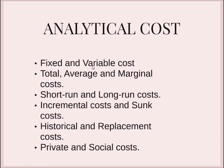Now we come to analytical costs, which do not appear in the books of accounts but play a very important role in business decisions. The first is fixed and variable cost. Fixed costs are those that remain fixed with the volume of production up to a certain quantity, whereas variable costs are those which vary with the variation in total output. For example, the cost of labor and the cost of raw material are variable costs because they change with an increase in output. Total cost is the total actual cost incurred on the production of goods and services — whatever is the cost of production in the cost sheet, that is our total cost.